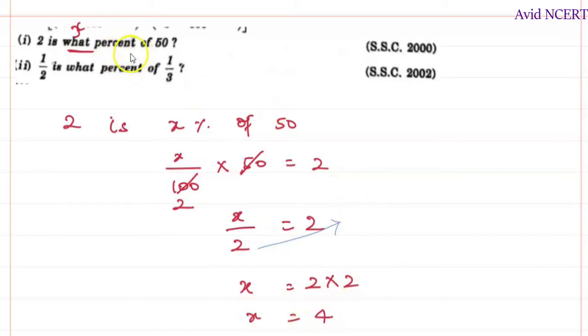That is x percent is 4 percent. So 4 percent of 50 is 2. So x here is 4 percent. Now let's solve the second problem, which is 1 by 2 is what percent of 1 by 3?